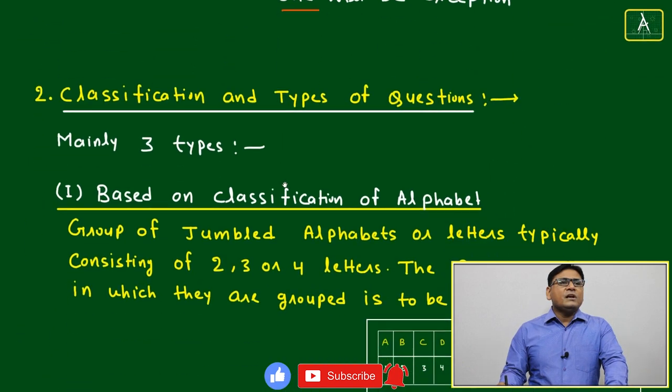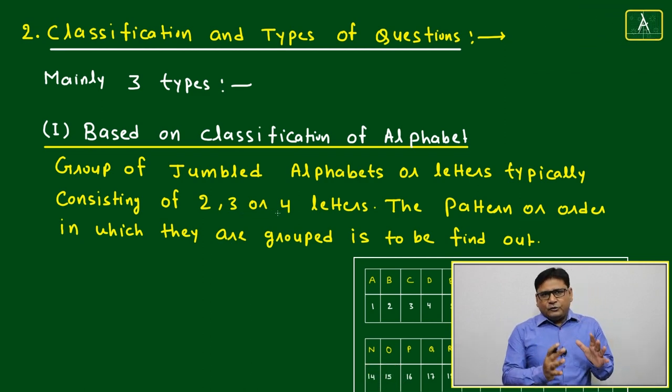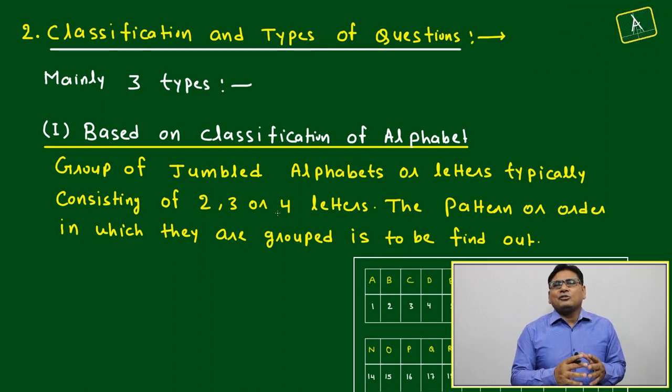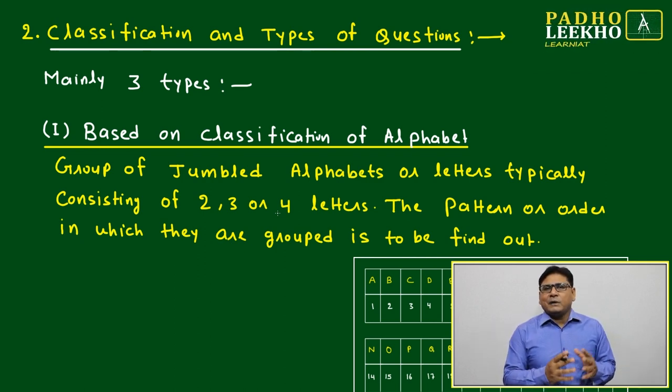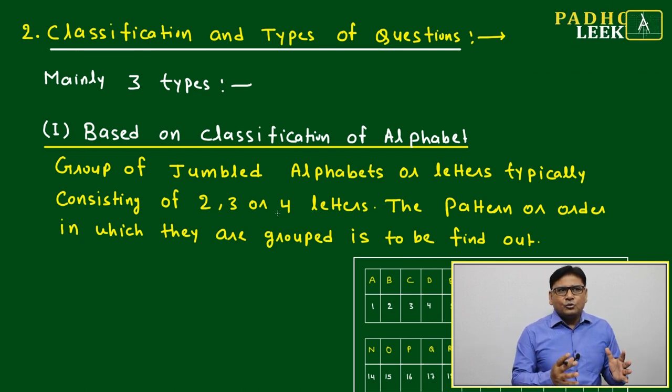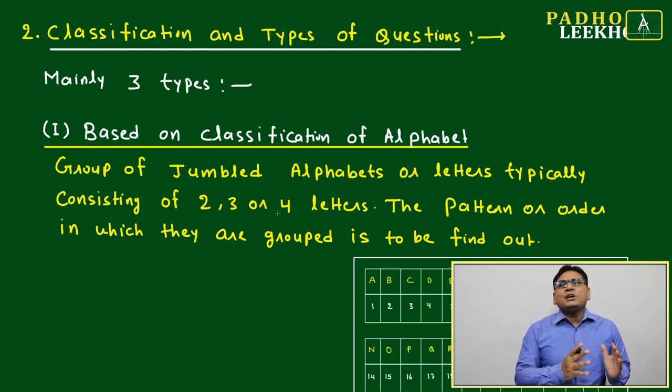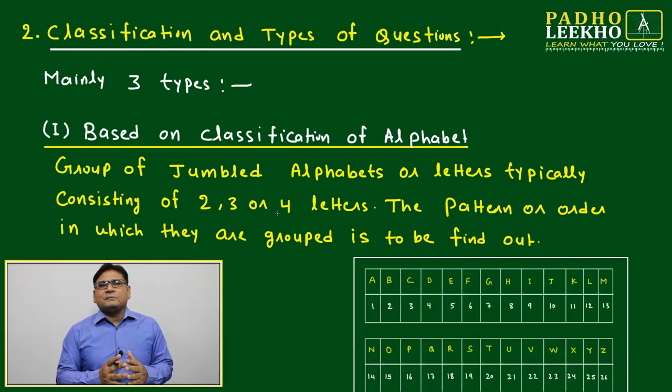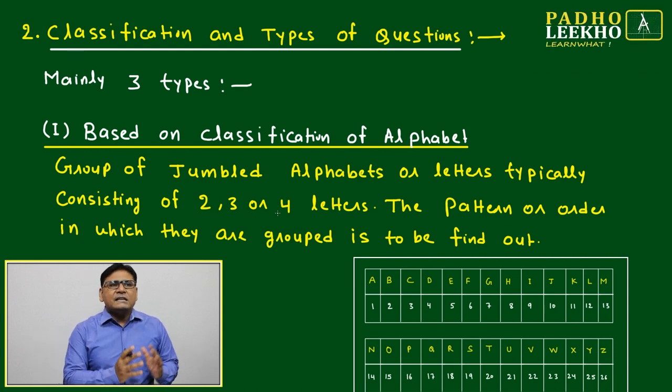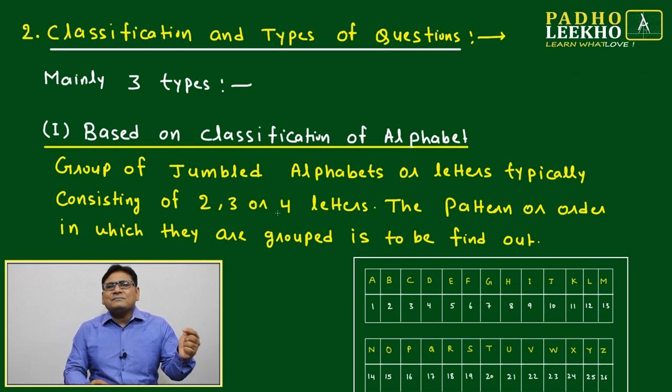Classification and types of questions - basically for exam point of view, classification is a very vast topic. We cannot conclude it in any subject, either mathematics or philosophy or maybe biology. We can't conclude classification as a topic or subject, but classification based on the requirement and target of the subject, we can make some boundary and will be able to understand. In a similar way, for understanding odd man out, we will make classification with a certain boundary.